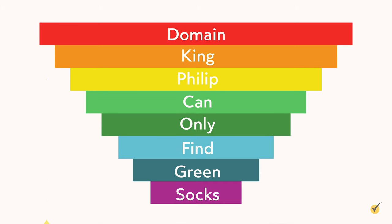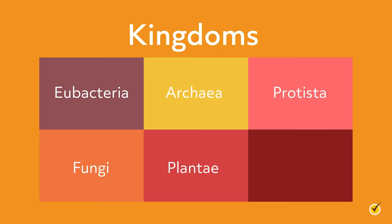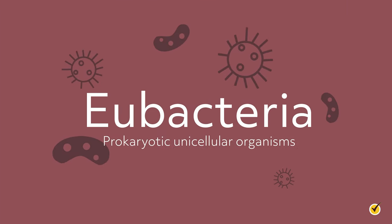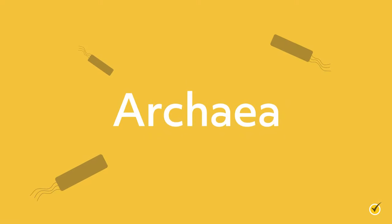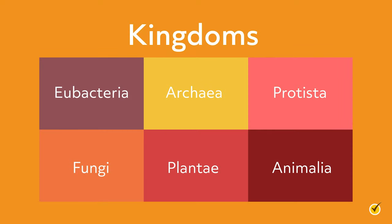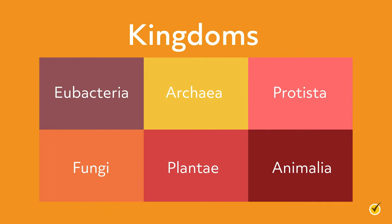After the three domains, there are six kingdoms: eubacteria, archaea, protesta, fungi, plantae, and animalia. The eubacteria kingdom consists of prokaryotic unicellular organisms, which includes most bacteria. Organisms in the archaea kingdom are also prokaryotes, and many are found in extreme environments like hydrothermal vents or hot springs. An older classification model combines eubacteria and archaea into one kingdom, monera. The next four kingdoms are all eukaryotic cells with nuclei and membrane-bound organelles.